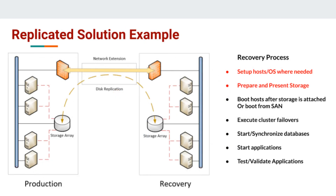The diagram here shows a fairly simple but fairly typical replicated solution. On the left, you have your production environment, where you'll have one or more storage arrays holding the data for your servers. It'll be connected to your live servers, usually through a fiber channel SAN fabric, or iSCSI, or similar technology, and your live production servers are constantly reading and writing data to and from this set of storage arrays. In the middle of the diagram, you'll see a network extension — typically a dedicated point-to-point link, or it could be a WAN connection like an MPLS cloud.